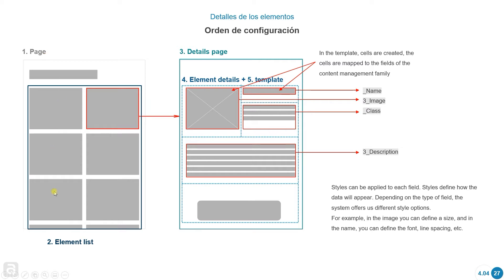Steps one and two we already know — creating pages. Step three is just creating another page. Within step three, we create an element detail (step four), and inside the element detail we add a template. When creating a template, we map these different spaces with the different contents from our family of records — for example, the name, the image, class, description, and any other fields we want to map.